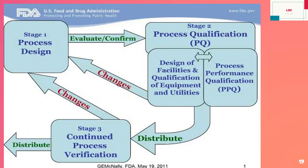In the APQR or PQR, when you see the trend at end of year, you may not be able to investigate on finding any event at that time. But in the case of continuous process verification, you verify each and every batch against your three validation batches, so that if anything goes wrong, you can rectify it easily with the QMS document.